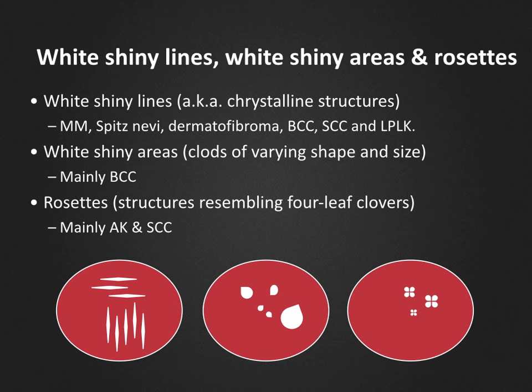White shiny lines are also known as crystalline structures. These are relatively short, straight white lines that are oriented parallel or perpendicular to each other. According to Dr. Ashvac Margoob, who also has an excellent podcast dedicated to these structures, these shiny white lines are believed to represent new or remodeled collagen which can be visualized only with polarized light due to the birefringent properties of collagen. They can be seen in melanomas, Spitz nevi, dermatofibromas, BCCs, SCCs, and lichen planus-like keratosis, among others.